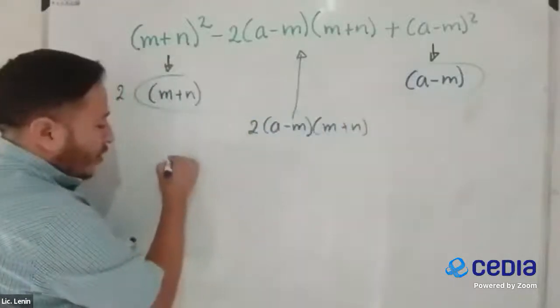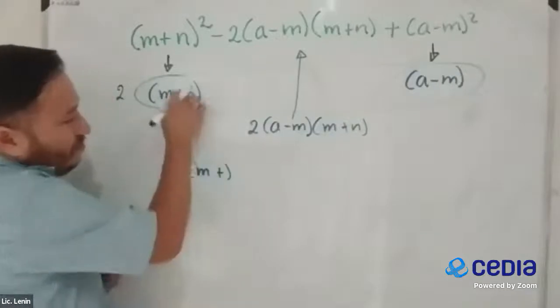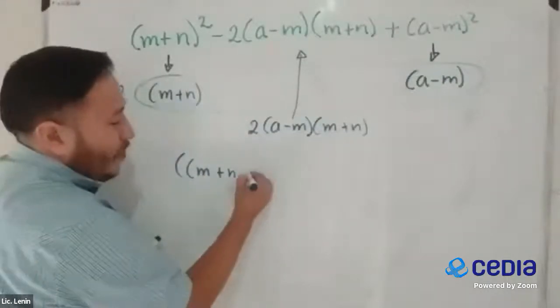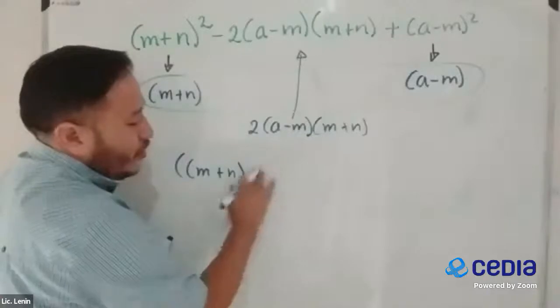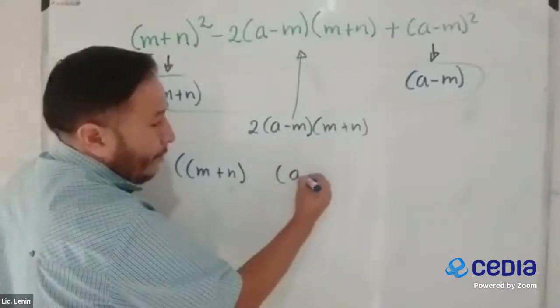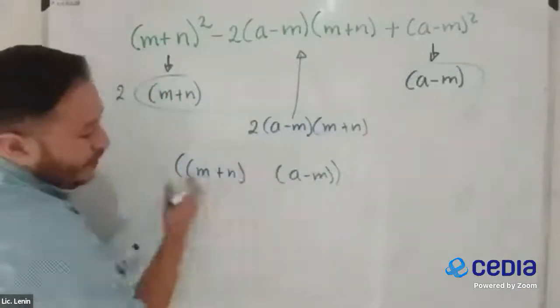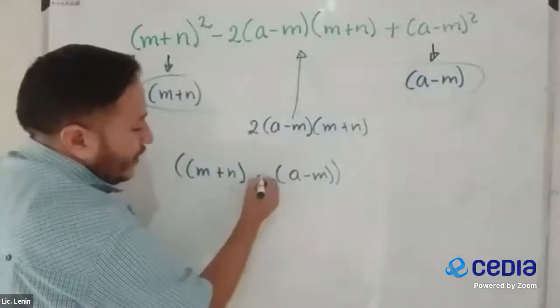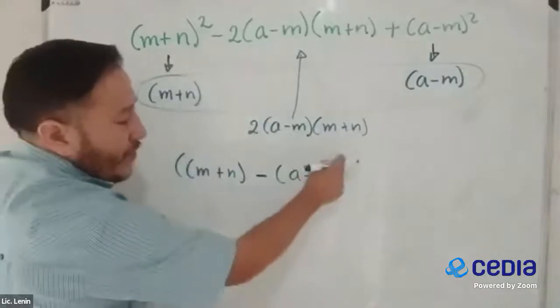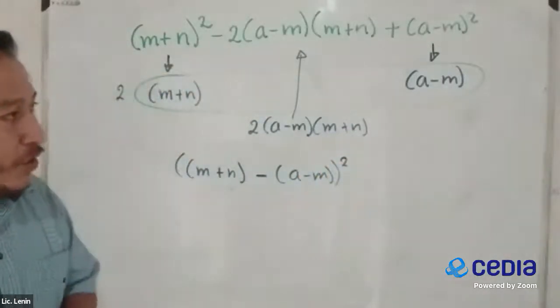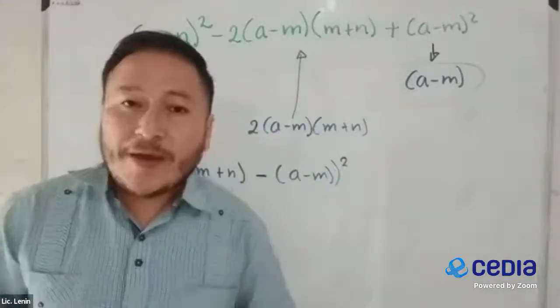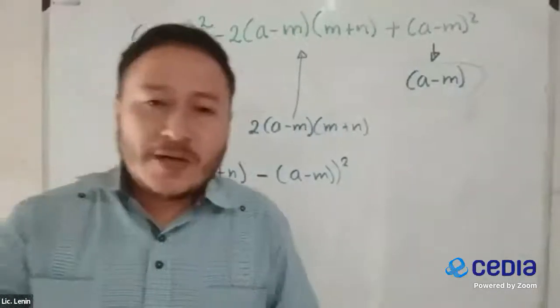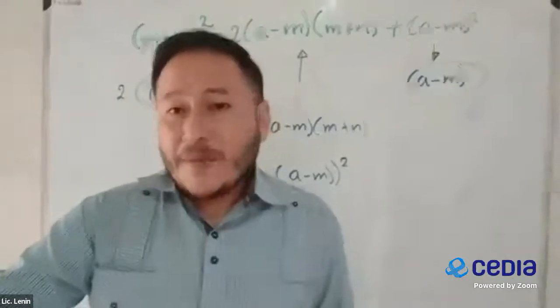Entonces, esto de aquí lo vamos a poner en medio de corchetes. Lo pongo entre corchetes porque ya tenemos paréntesis. ¿Puedo poner otros paréntesis? Sí, sí puedo. Pero para que se vea la diferencia, yo le pongo entre corchetes. ¿Qué signo va aquí? Va el signo del que encontramos, que sería el que aquí. Y obviamente debemos elevar al cuadrado. Ahí tenemos resuelto nuestro trinomio cuadrado perfecto. Pueden estar binomios, puede estar lo que sea, pero el procedimiento no cambia.